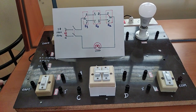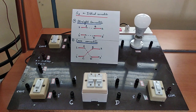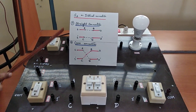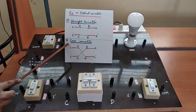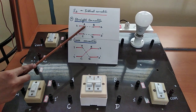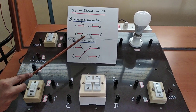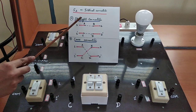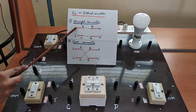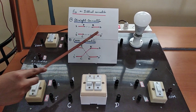The intermediate switch S3 can be connected in two ways: a straight connection and a cross connection. In a straight connection, terminal A connects to B and terminal C connects to D internally — forming a straight path from 1 to 2 and from 1 dash to 2 dash respectively.